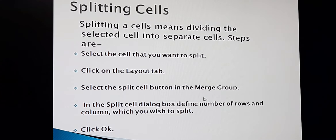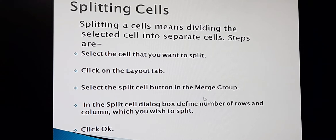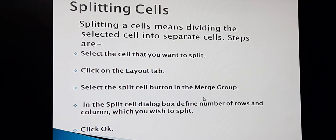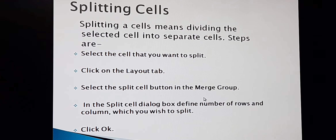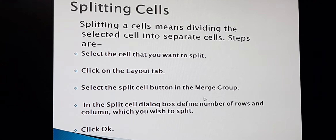The third topic for today is splitting cells. Do you know the meaning of splitting a cell? Split basically means division. Splitting a cell means dividing the selected cell into separate cells. Sometimes you need to divide a cell into two rows, or divide a cell into two columns, or divide a cell into two rows and two columns. For this purpose, we have to use the split cells function.